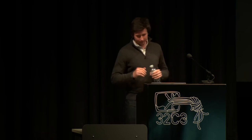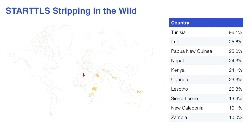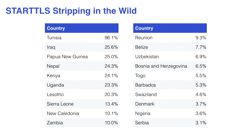Schauen wir uns an, welcher Anteil von Nachrichten von bestimmten IP-Adressen korrumpiert sind. Es ist ein unglaublich hoher Anteil: 96 Prozent der E-Mails aus Tunesien werden daran verhindert, TLS zu verwenden, durch irgendein Netzwerkgerät dazwischen, weil es das STARTTLS-Kommando korrumpiert. Das sind die Top-10-Länder – wenn man die Top 20 anschaut, kommen langsam auch die europäischen Länder.